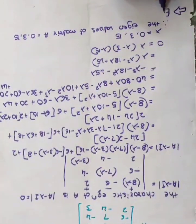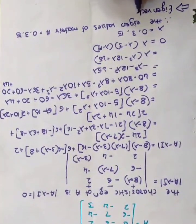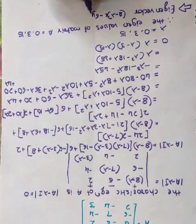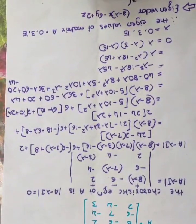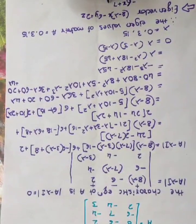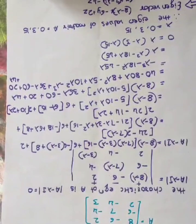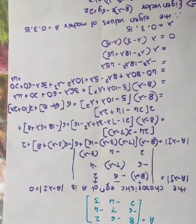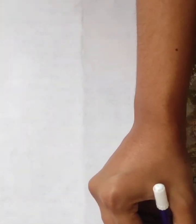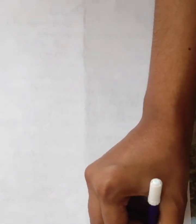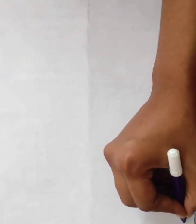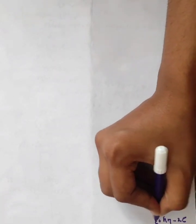Now to find the eigenvectors, we set up the system. For each eigenvalue we solve (A minus lambda I)X = 0, giving equations: (8 minus lambda)x minus 6y plus 2z equals 0; minus 6x plus (7 minus lambda)y minus 4z equals 0; 2x minus 4y plus (3 minus lambda)z equals 0.